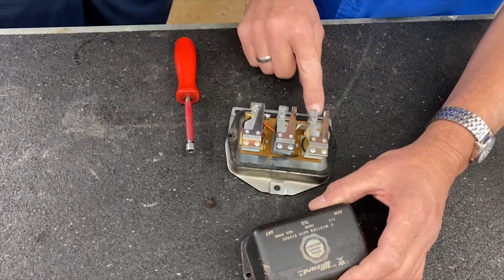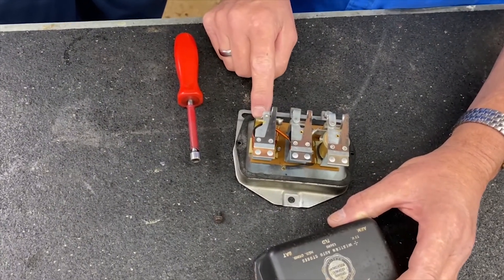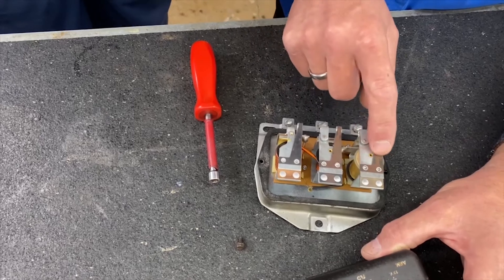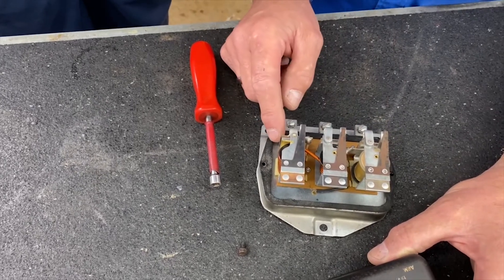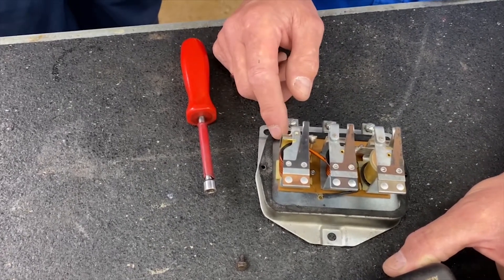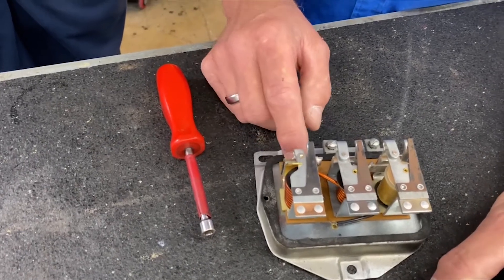So here's the internal coils of the voltage regulator and you can see by the rust here that it is quite old and obviously it's quit working. That's why he wants us to convert it for him.